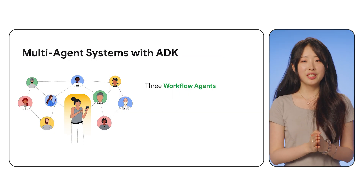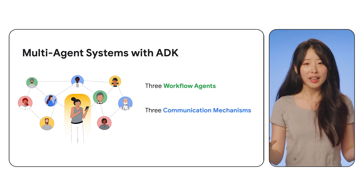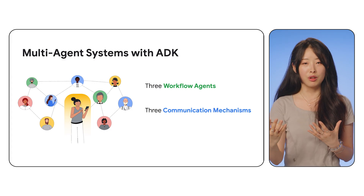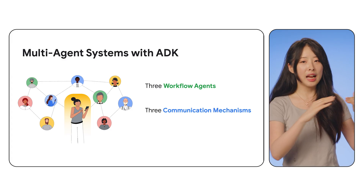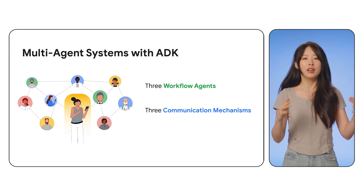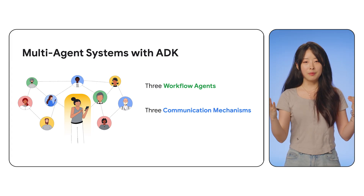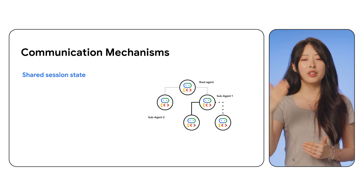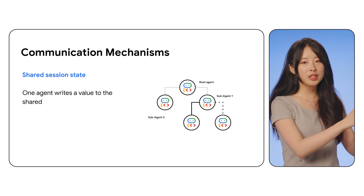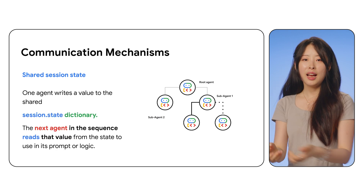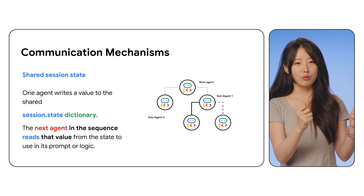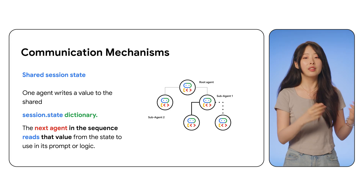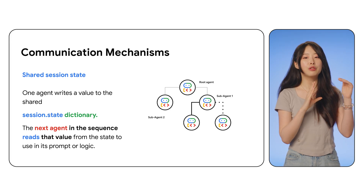The second part of today's episode is how agents communicate with each other. We know the hierarchy from last episode and we just talked about workflow agents, but how do agents actually talk to each other? ADK gives us three communication mechanisms. The first is shared session state — think of it as a shared whiteboard. One agent writes its result and passes it to the next agent, and the next agent reads it from this whiteboard. For example, an LLM agent can save its output to the state, and another agent can pick it up and read it.